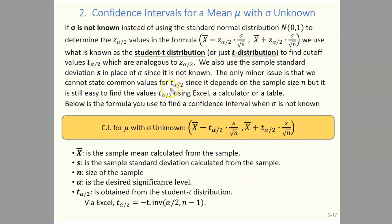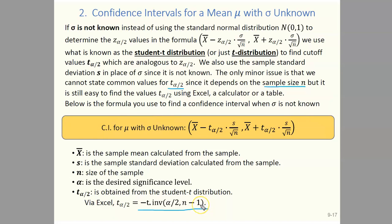Take note that the t alpha over 2 values depend on the sample size n. Since they change depending on your sample size, we don't have common fixed values the way we do for z alpha over 2. The z alpha over 2 values are independent of sample size, so we can state them for 90%, 95%, and 99% confidence intervals. But we can't do that for the t's — it's easiest to evaluate them for each problem using the Excel command. We'll evaluate the t alpha over 2 each time because it changes with n.